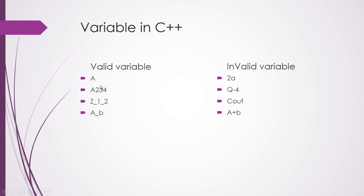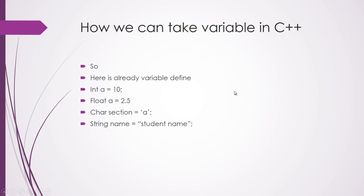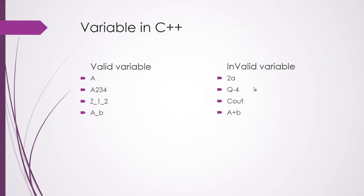Here are invalid variables: '2a' is invalid because it starts with a numeric value, so it will not store the value. 'q-4' is invalid because it contains a special character — the minus sign. 'cout' is invalid because it is a keyword in C++. 'a+b' is also invalid because it contains the plus sign. You cannot use invalid variables to store any value, otherwise it will give an error.